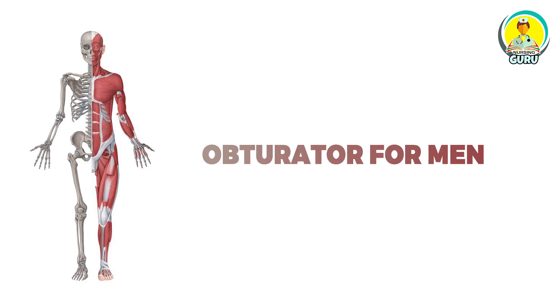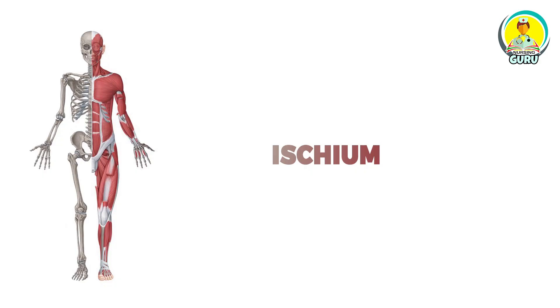Now I am moving to the obturator foramen. In the obturator foramen, it is located at the acetabulum — the upper part of the abstract — whose length and diameter is called the pubic bone and ischemic bone. The ischium bone is the posterior and inferior part of the hip bone. It is divided into two parts: the body and the ramus.